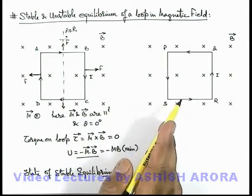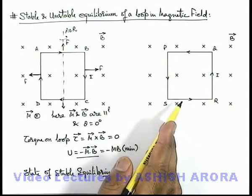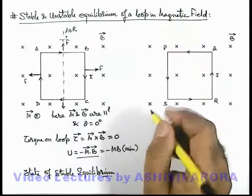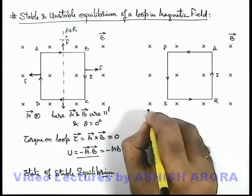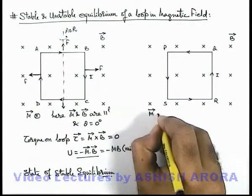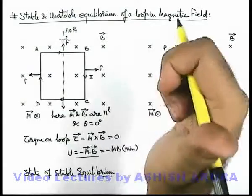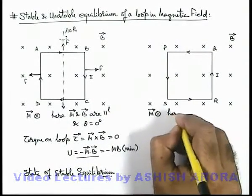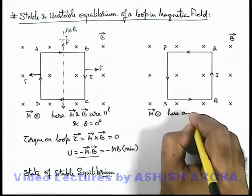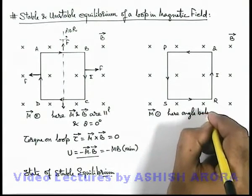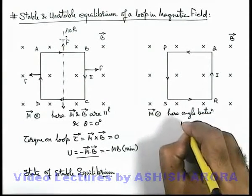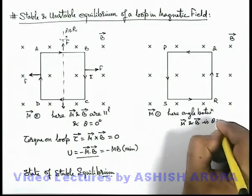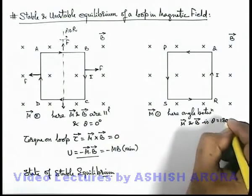Now analyzing the second case: according to the direction of currents, the magnetic moment m vector exists in the outward direction, which is along the area vector given by the circulation of current direction. So here we can write that the angle between m vector and B vector is 180 degrees or pi radians.